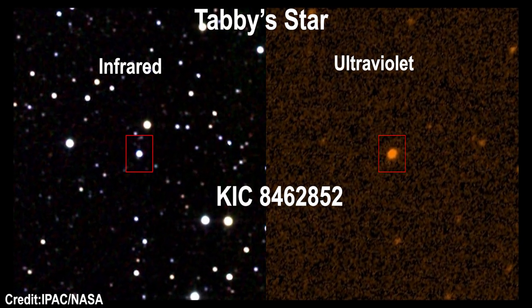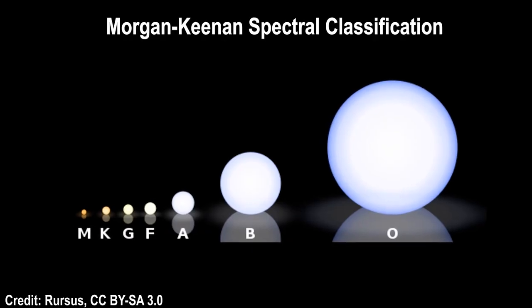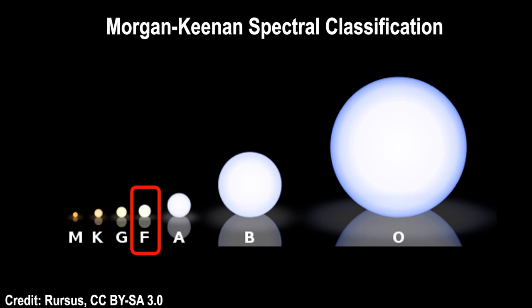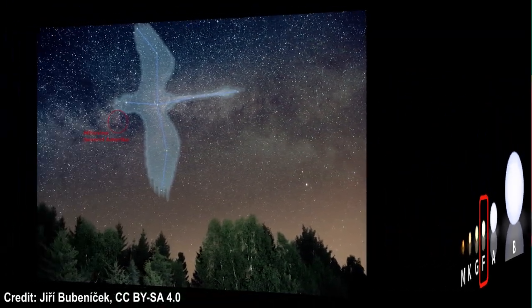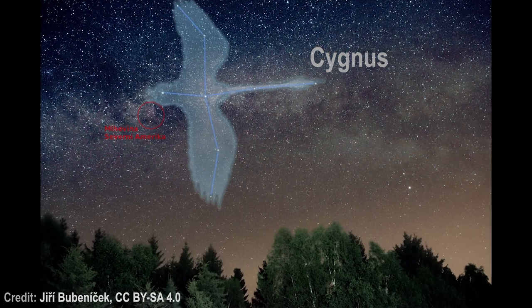Tabby's star, designated as KIC 8462852 in the Kepler Input Catalog, is an F-type main-sequence star, about 1,470 light-years away in the constellation of Cygnus.